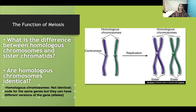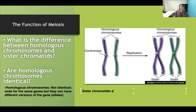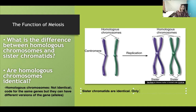Sister chromatids, which you should remember from mitosis, are identical. Mom's chromosome made an exact copy; dad's chromosome made an exact copy. Sister chromatids only occur after DNA replication. Try to remember: DNA replication occurs during S phase of the cell cycle. S phase — think of 'S' for synthesis — is also called DNA replication or DNA duplication.